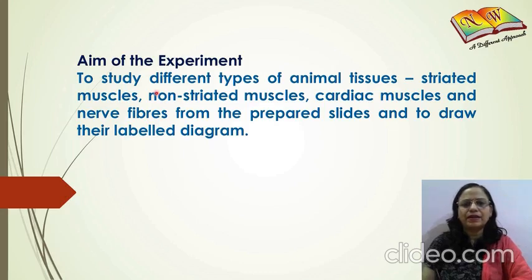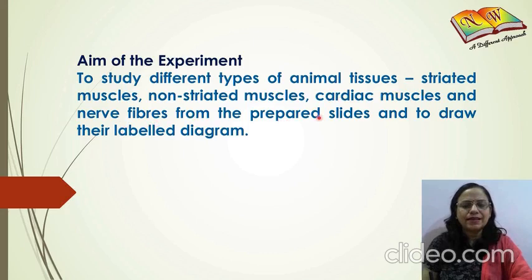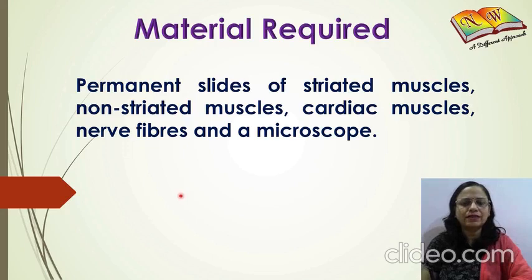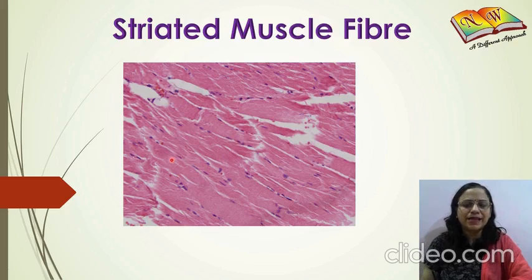The aim of this experiment is to study different types of animal tissues — striated muscles, non-striated muscles, cardiac muscles, and nerve fibers — from permanent slides, and you should be able to draw the diagrams as well. Material required would be permanent slides of striated muscles, non-striated muscles, cardiac muscles, and nerve fibers, along with a microscope to see those slides under suitable magnification.